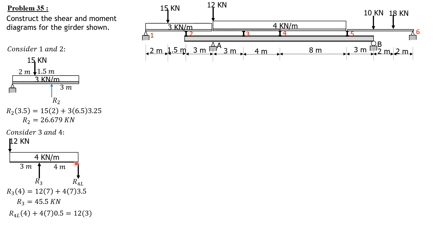We consider R4 left to be downward, so plus 4 times 4 plus 4 times 7 times 0.5 equals 12 times 3. So R4 left is 5.5 kilonewtons.